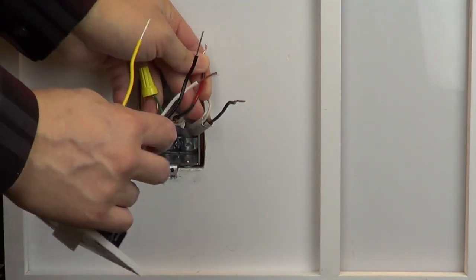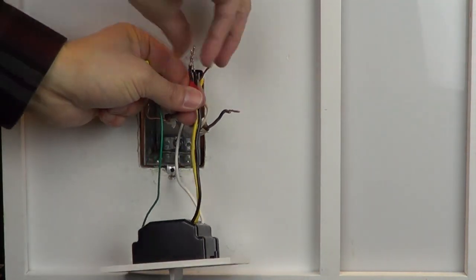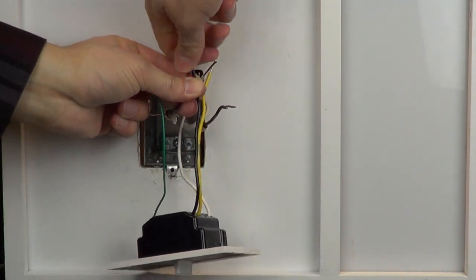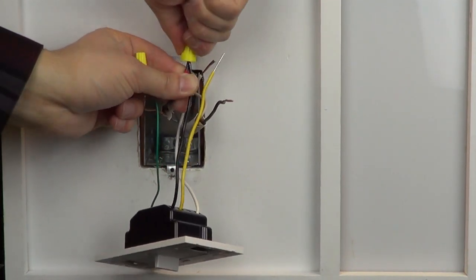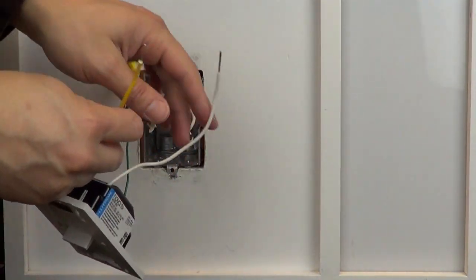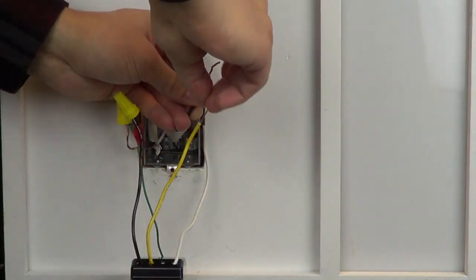Next, connect the hot live wire from the old switch to the black wire on the dimmer using a wire cap. Connect the remaining wire that goes to the light to the yellow wire on the dimmer.